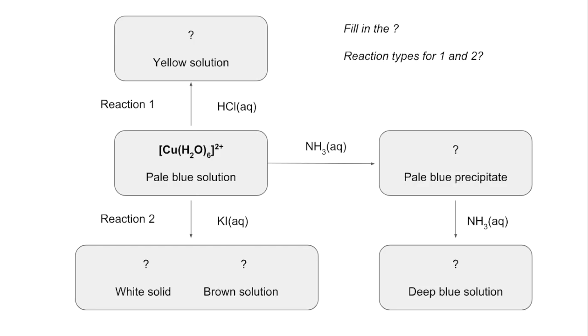In this video I'm going to look at the transition element question from the 2017 paper one. The first part of the question you had to fill in the five question marks where you give the formula for the products of those reactions, and then you have to specify the type of reaction for reactions one and two. If you want to have a think about that, pause the video and then go on when you're ready.